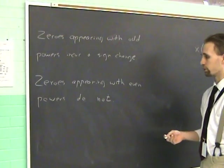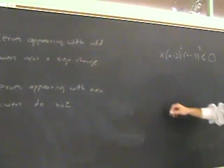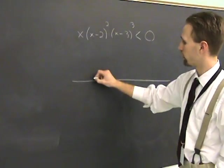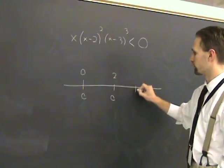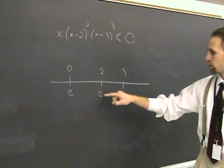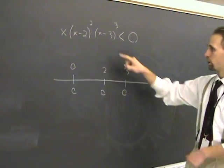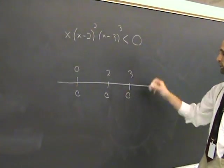As a last example of that, how to use this quickly, we want to solve x³(x-2)²(x-3)<0. Mark down where it's 0. It's 0 at 0, it's 0 at 2, and it's 0 at 3. You pick a number over here, greater than 3. All the three factors are going to be positive, so the product is positive.